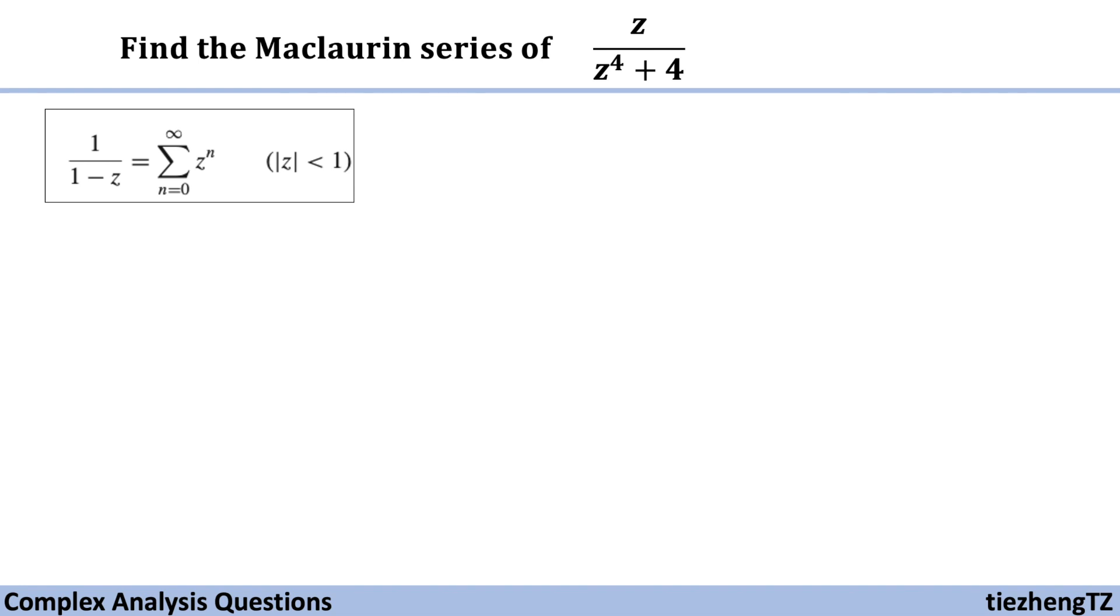Okay, just do some change here. The given function z over z to the power of 4 plus 4 can be changed into z over 4 times 1 over...